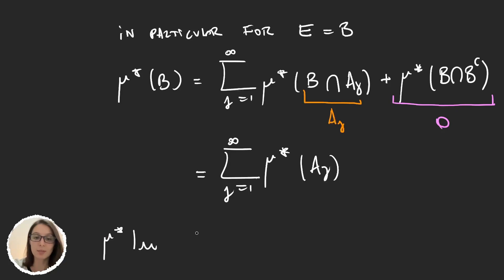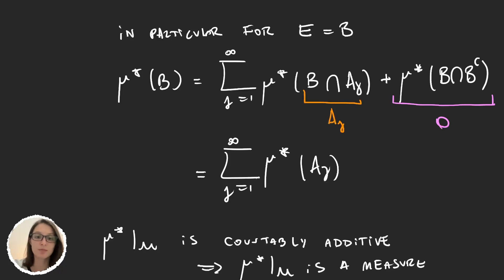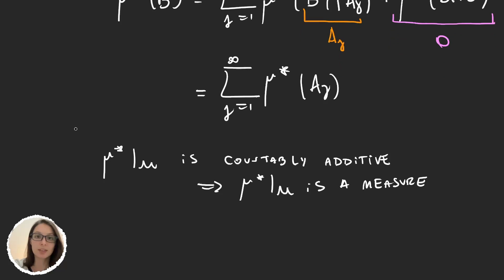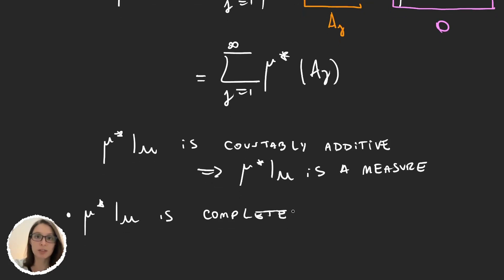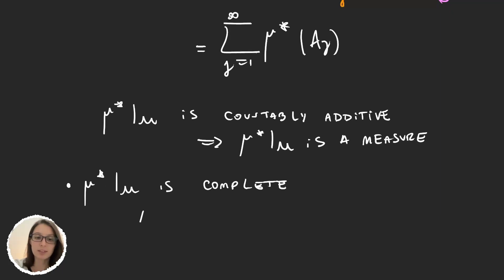We have that μ* restricted to M is countably additive, and therefore it is a measure. Now let's prove that μ* is complete. To prove that a measure is complete, we take an element in the sigma algebra that measures zero and prove that its subsets are also elements in the sigma algebra. So we take A, an element in the sigma algebra such that μ*(A) = 0.